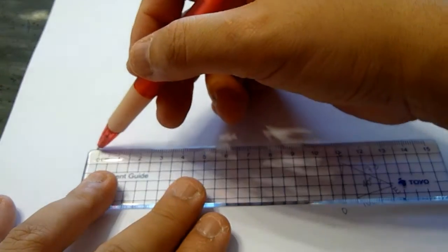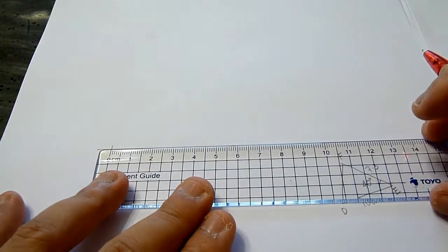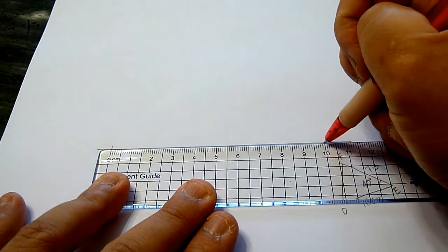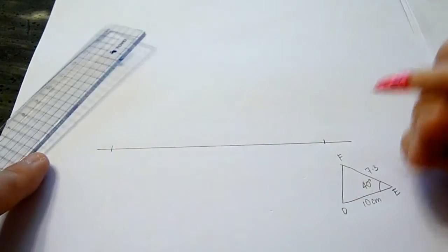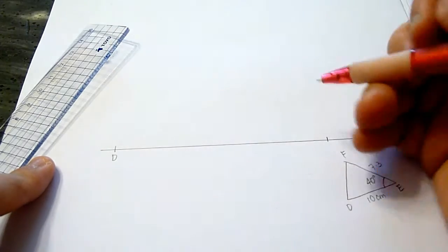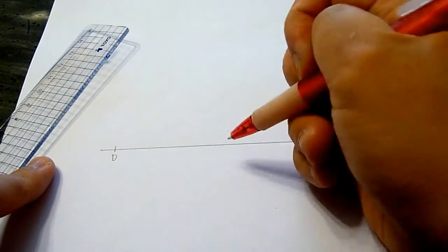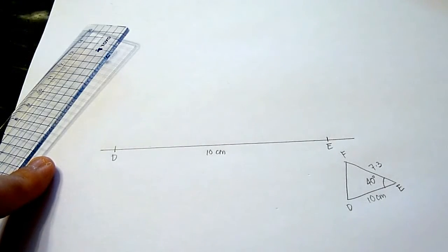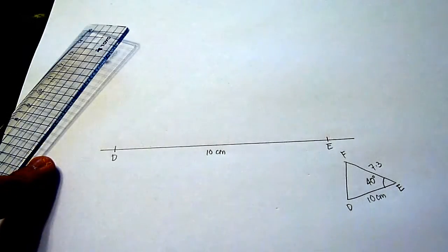Next, use a ruler to draw the base of the triangle, which is 10 cm. We mark the two points DE, which measures 10 cm.